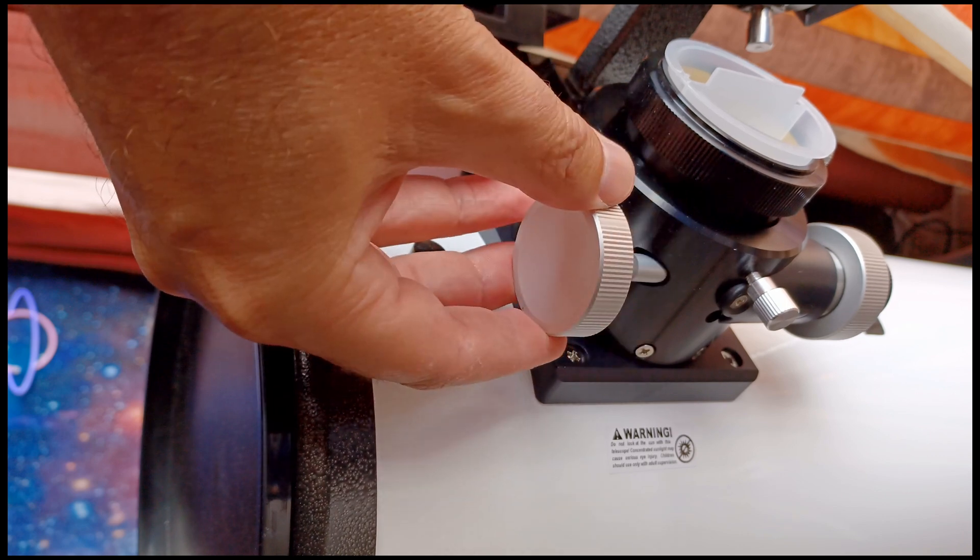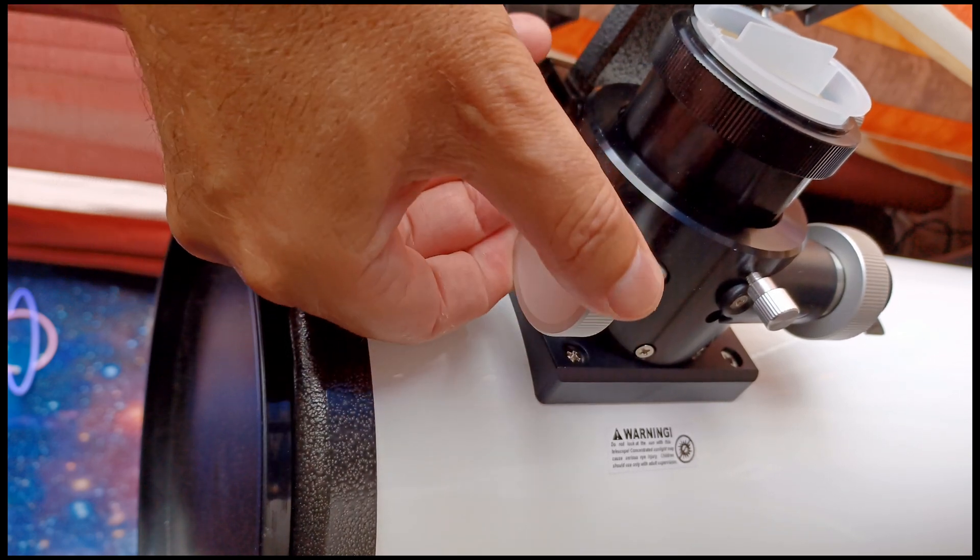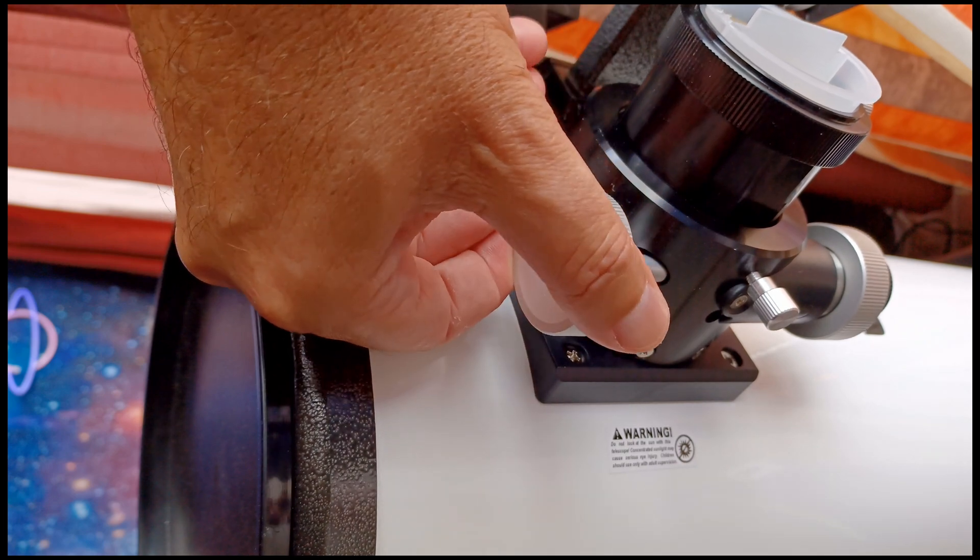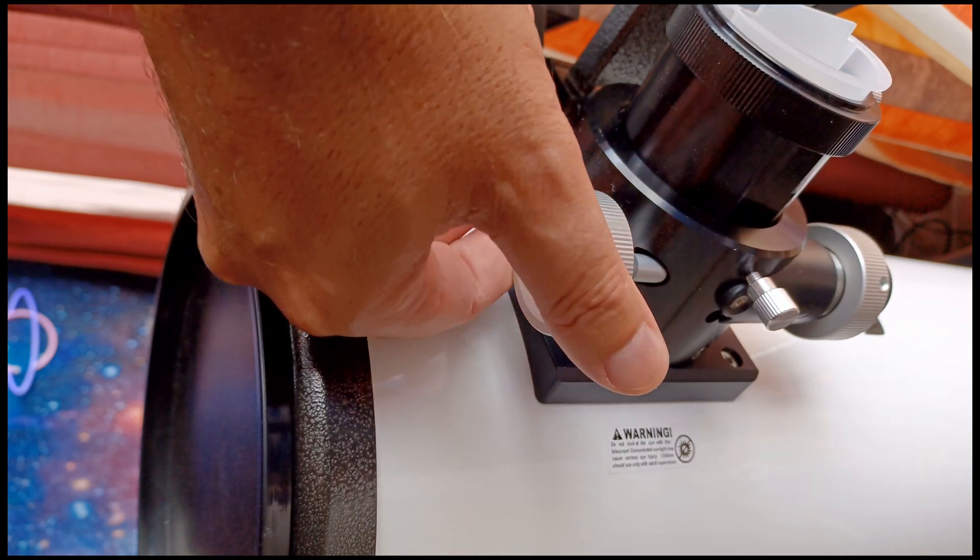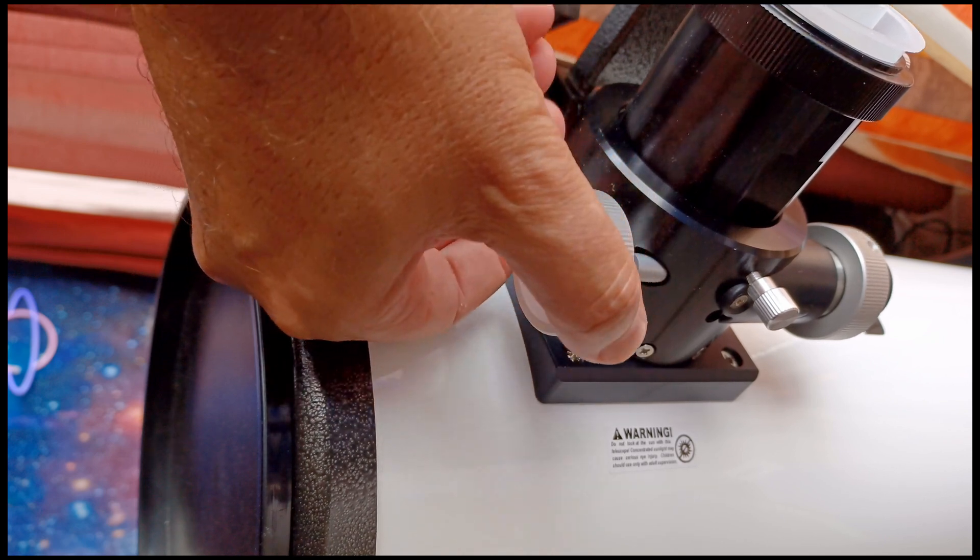The situation that happens many times is that you are turning the focuser up or out, and the donut gets smaller and smaller in the right direction, but the focuser reaches a limit and you can't go further.